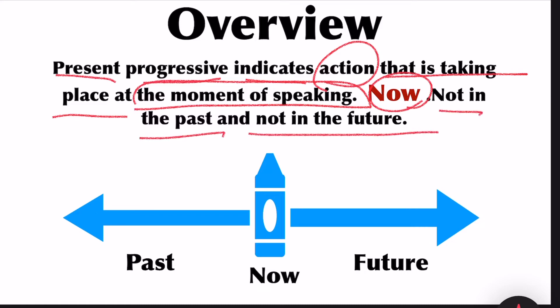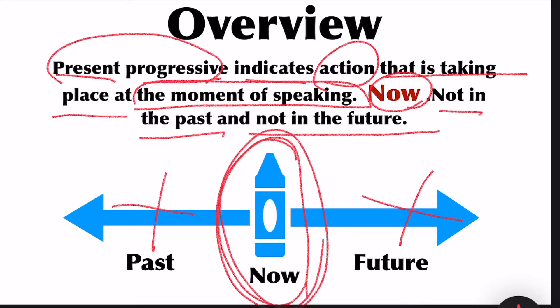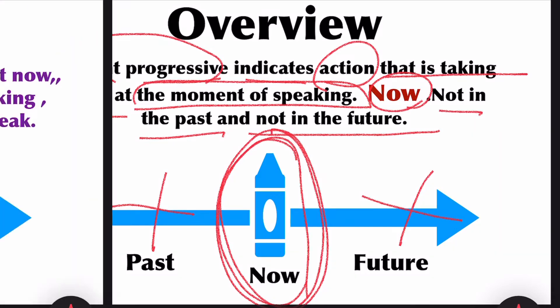Present progressive tense represents an action taking place now, not in the past and not in the future. Action happening now is expressed with the tense called present progressive tense.